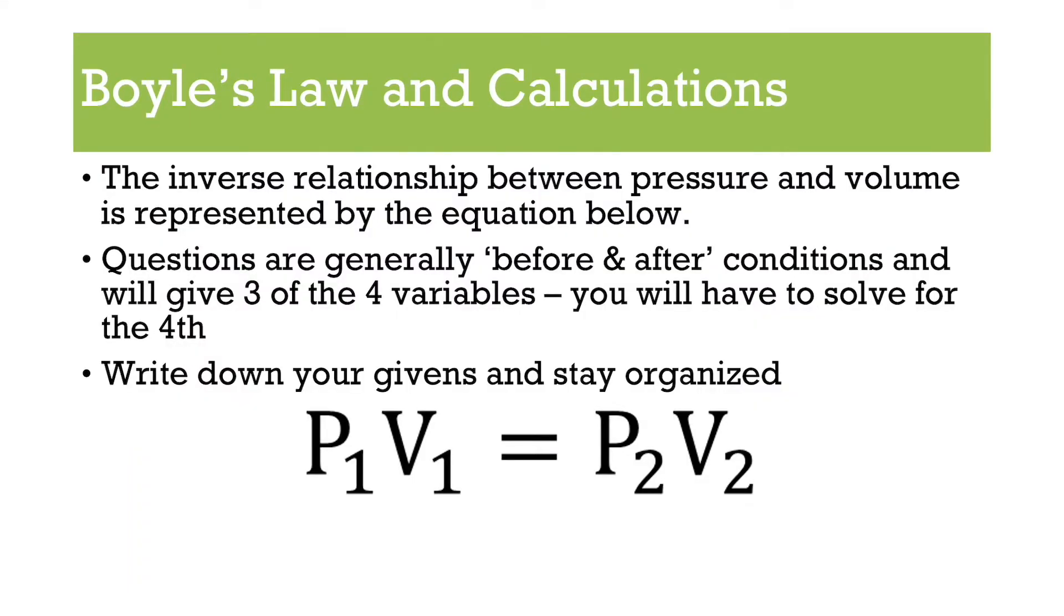So if we're gonna, and really what's more important with this is the calculations. So again, we have this inverse relationship, and it's shown by this equation. And so these equations are before and after situations. You have your before, your initial pressure and volume, and you're after your P2 and V2, pressure and volume two. So in these calculations, you'll be given three out of the four variables. It's your job to find the fourth one. As long as you write down your knowns, your unknowns, and kind of stay organized, this is on the simpler end of calculations.